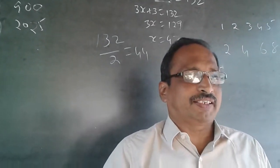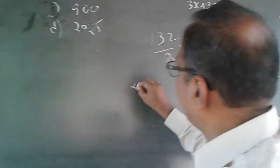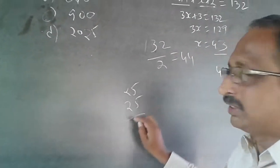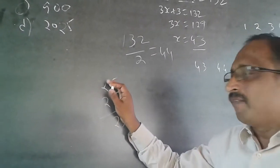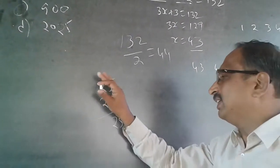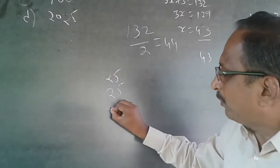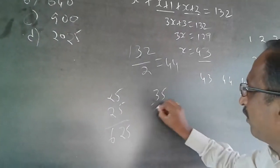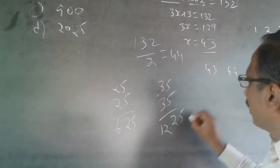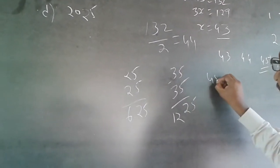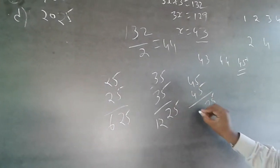I'll also show you how to square numbers ending in 5 faster. For 25²: the last part is always 25 (5×5), and for the remaining digit 2, multiply it by the next number 3, giving 6. So 25² = 625. For 35²: 5×5 = 25, and 3×4 = 12, so 35² = 1225. For 45²: 5×5 = 25, and 4×5 = 20, so 45² = 2025.